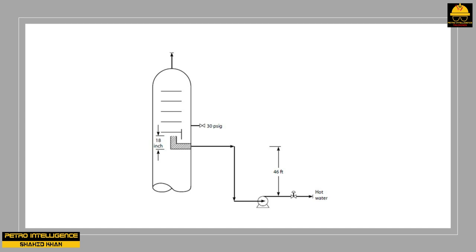The boiling point pressure of the water equals 30 PSI G — the pressure in the tower — so the water draw is at its bubble point pressure. At 36 PSI G pump suction pressure, the available NPSH is: (36 − 30) × 2.3 = 14 feet. This matches the required NPSH at 110 GPM, so the pump cavitates. Yet it seems as if at least half of the 46 feet of liquid head to the pump is missing.